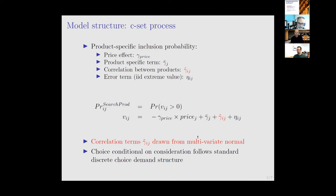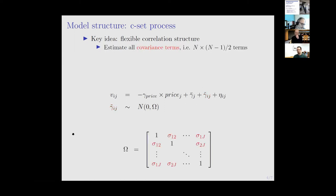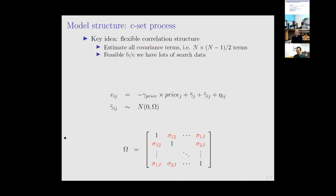Once consumers have decided which products to consider, they make a choice conditional on consideration that follows a standard discrete choice demand model. For the gamma-tilde terms, we allow for a flexible correlation structure drawn from a multivariate normal centered at zero. We estimate all covariance terms in a fully flexible fashion. In a setting with 50 or 100 products, that's a lot of terms - but we have enough data at the product-pair level to pin them down with high precision.